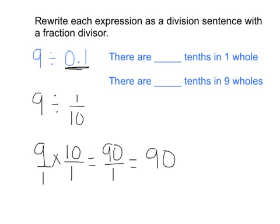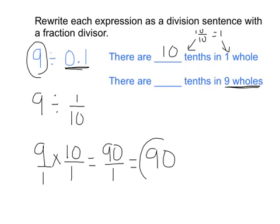It says there are blank tenths in one whole. Well, I know that there are 10 tenths equals 1, right? 10 tenths is equal to 1 whole. How many tenths are in 9 wholes? So in these 9 wholes, I found that there were 90 tenths.